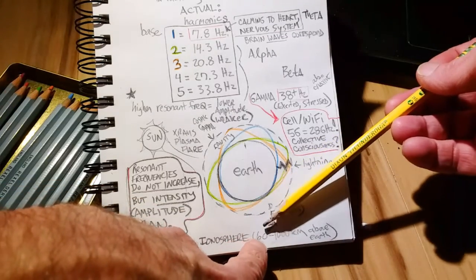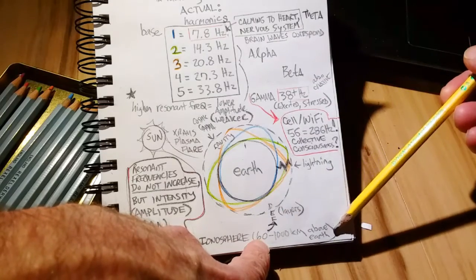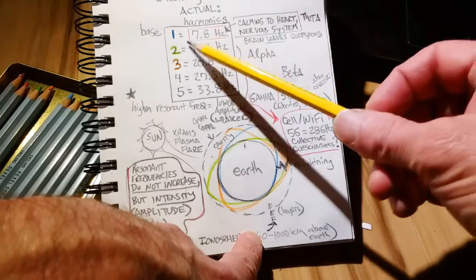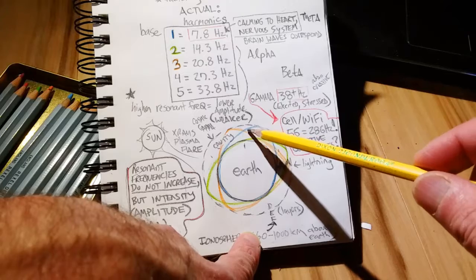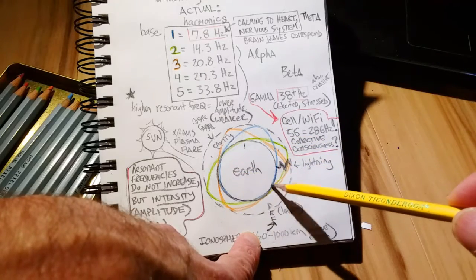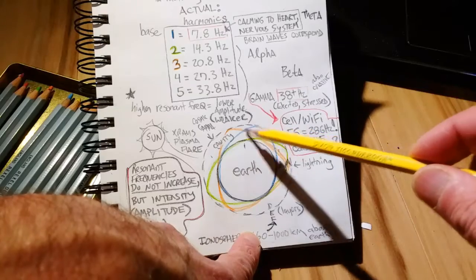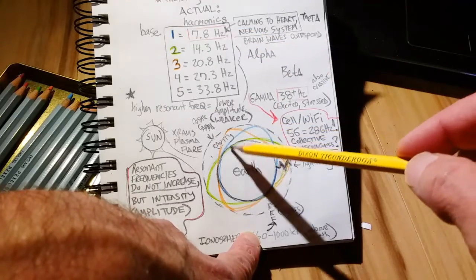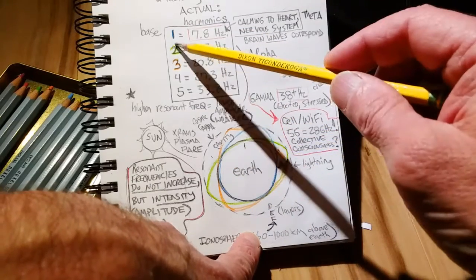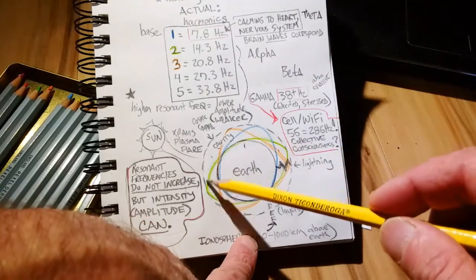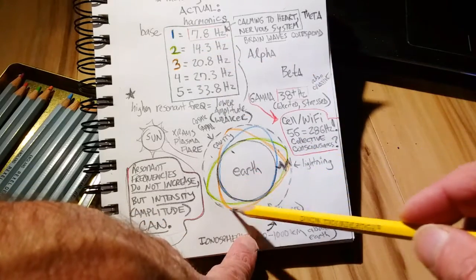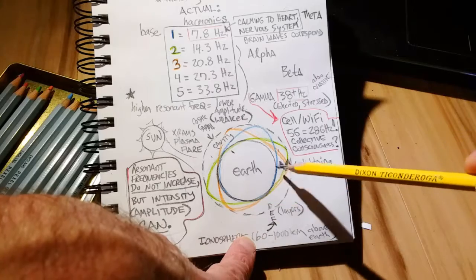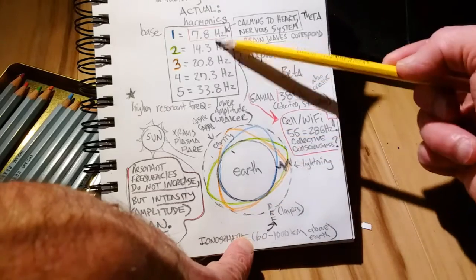The ionosphere is about 60 to 1,000 kilometers above the Earth. 7.8 or the base 1 frequency is in blue here, and you can see that this goes basically around the Earth, hugging the Earth, bouncing one time off the ionosphere. Again, this is the most relaxing frequency that is just basic to life. And the second base, you can see, bounces twice off the ionosphere. The third base goes in a triangular fashion, bouncing, making three points of contact with the ionosphere, etc. down the line.